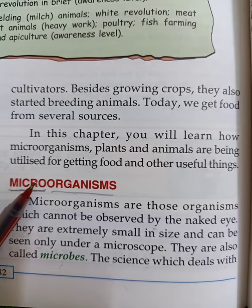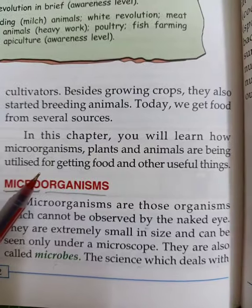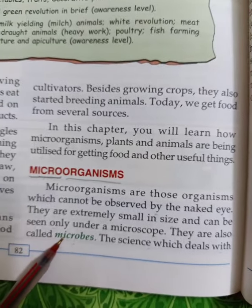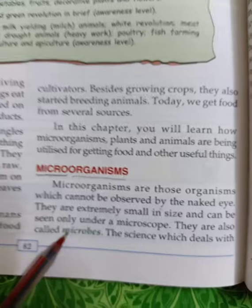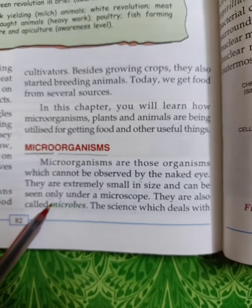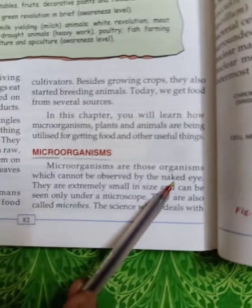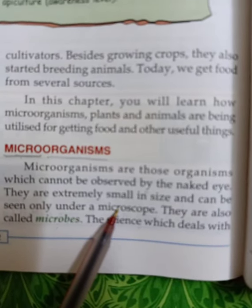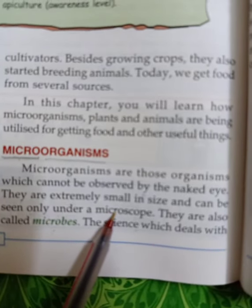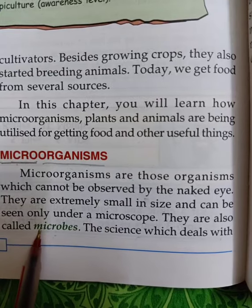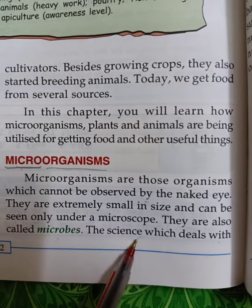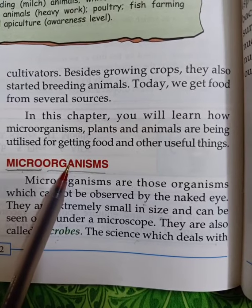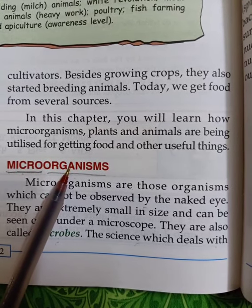In the previous lecture, we had discussed what microorganisms are. Microorganisms are organisms that cannot be seen with the naked eye because they are very small in size; for seeing them, we need a microscope. Such organisms are called microorganisms. The science that deals with the study of microorganisms is called microbiology.